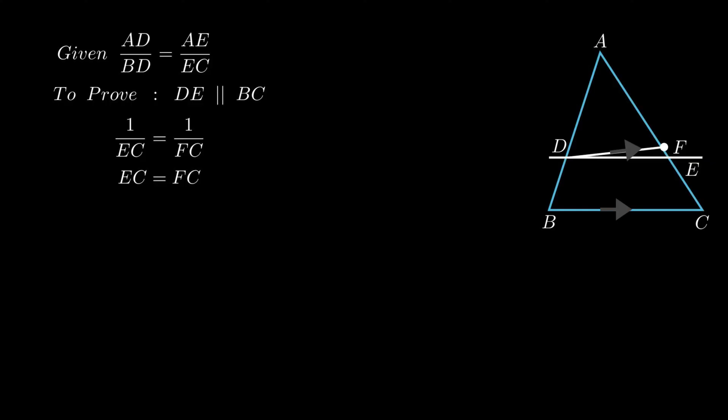On cross multiplying we get EC equals segment FC. Now this equation is only valid if point E and point F lies on each other.